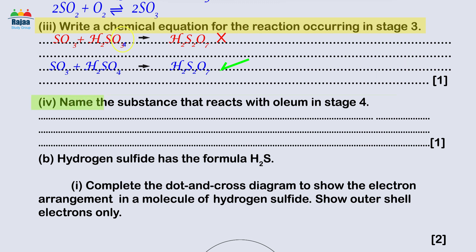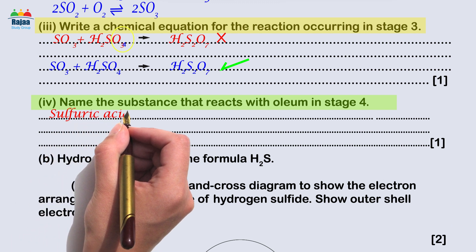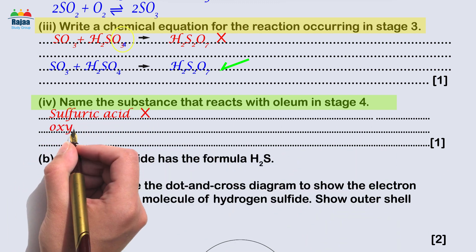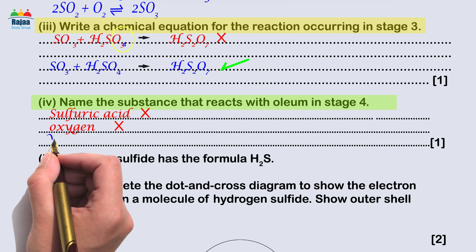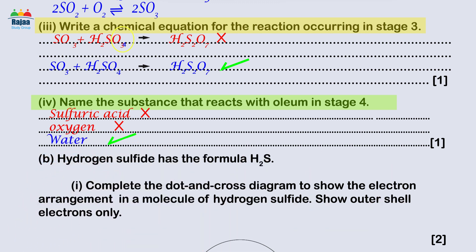Four: Name the substance that reacts with oleum in stage four. This was adequately addressed. Sulfuric acid or oxygen - oh no, those were the most frequent mistakes. Water was the correct response. Score: one mark.